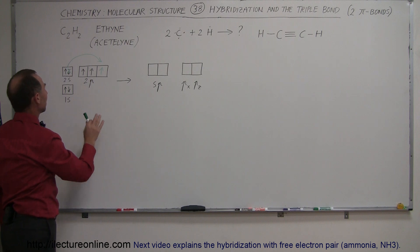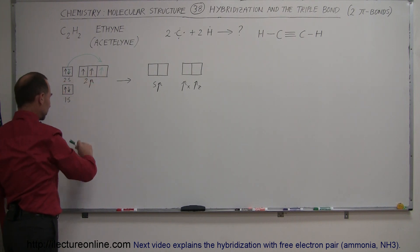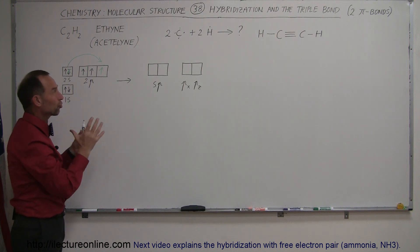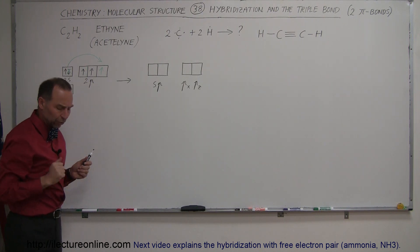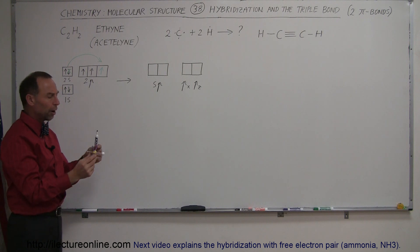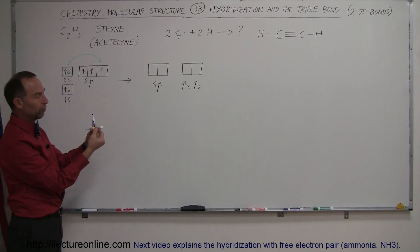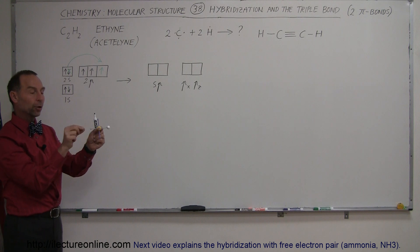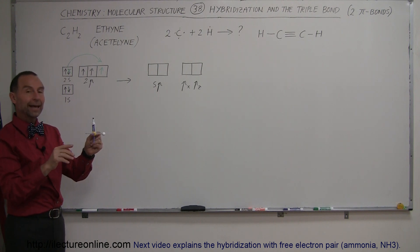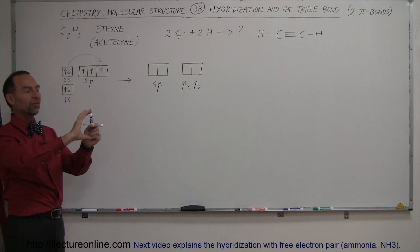Those four electrons — one in the 2s orbital and the other three in the 2p orbitals — cannot form the proper physical structure to make ethyne. So what happens instead is that only two of the orbitals will be hybridized: one to make the bond with the hydrogen and one to make the bond with the carbon on the other side.